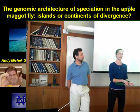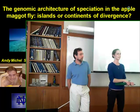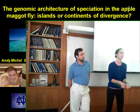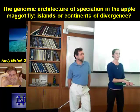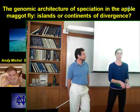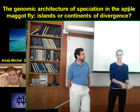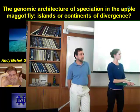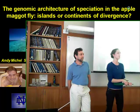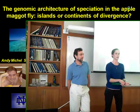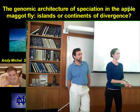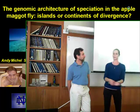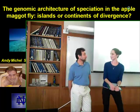His lab works on speciation and host specialization in the Rhagoletis pomonella species sibling complex, using field work, selection experiments, and molecular genetics to answer interesting questions in this area. They are also looking at color polymorphisms in a bioluminescent Jamaican click beetle. He's also the director of the GLOBE program, the Global Linkages of Biology, Environment, and Society.